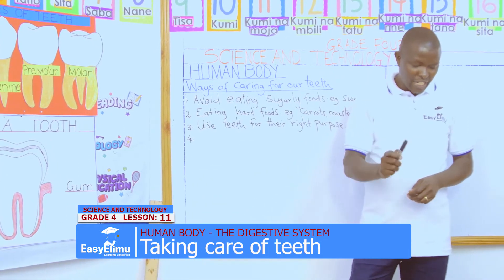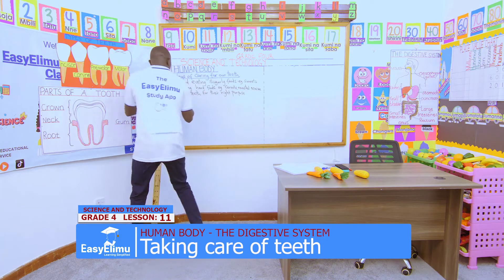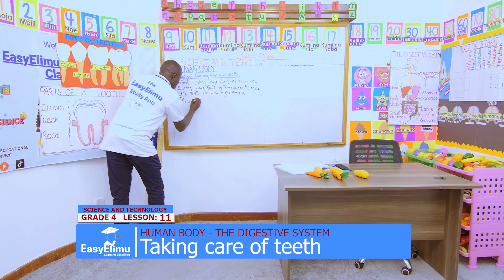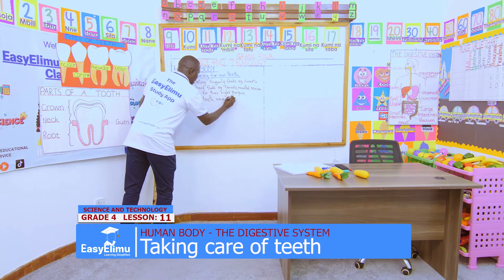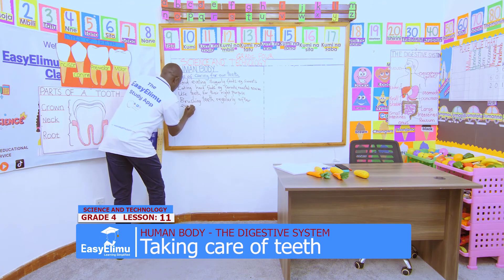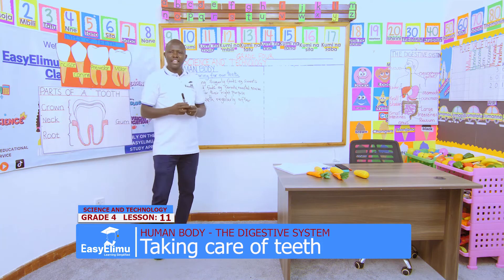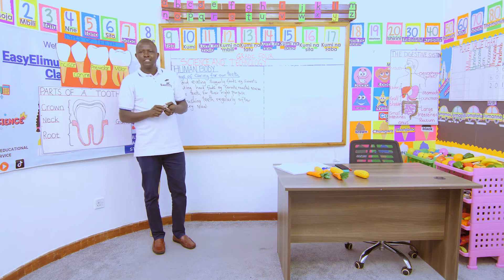Another way we take care of our teeth is to use a brush — we brush our teeth regularly after every meal. After you finish eating, kindly brush your teeth. And what do we use to brush our teeth? We have a toothbrush, a toothpaste, and clean water.